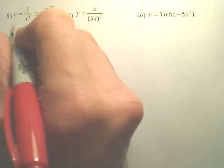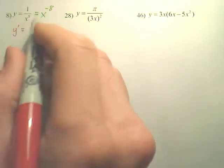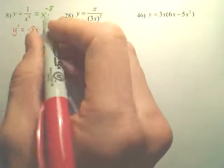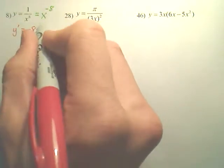You just take this, this is y prime, the derivative. You take the negative 8, put it in front, and you drop the power by 1. So when you subtract 1 from negative 8, you actually get negative 9.